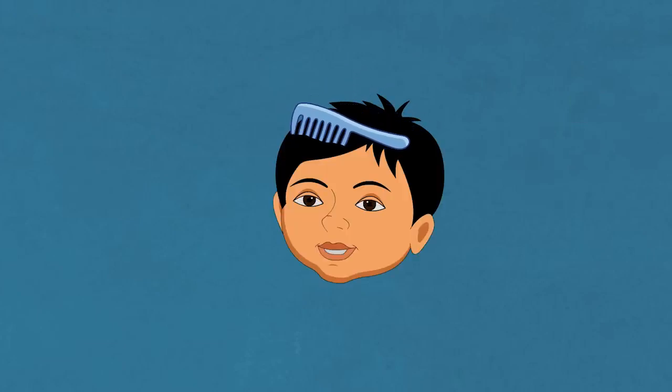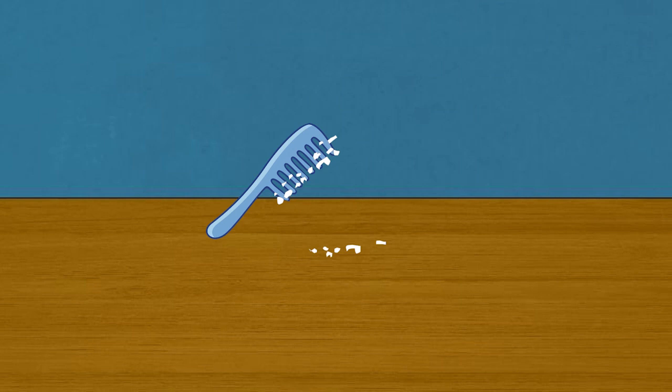Procedure: Comb dry hair vigorously for about 30 seconds. Bring the comb near small pieces of paper and observe if the comb attracts the paper. Repeat the procedure with different comb and different pieces of paper if available.